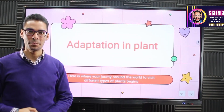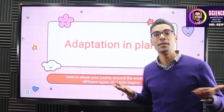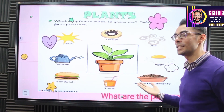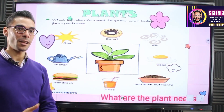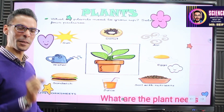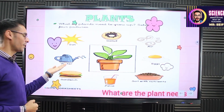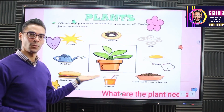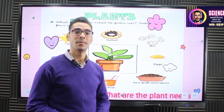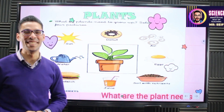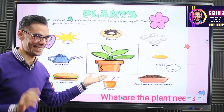We are going to study adaptation in plants. Adaptation means how the plants stay alive — how do they survive? Let's start with this activity. In front of you, around this plant, are lots of requirements. Which one of them is necessary for plant life? You can see here: sun, water, a sandwich, juice, soil with nutrients, eggs, air, and donuts.